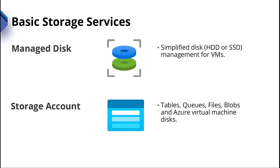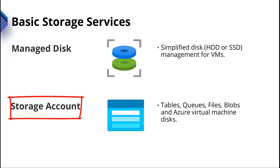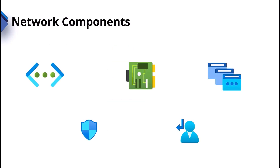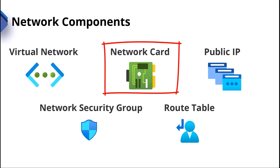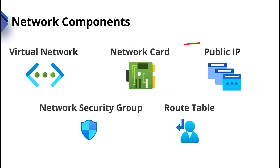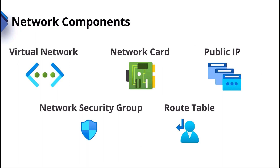For basic storage services, you've got managed disks — a simplified disk that could be a hard drive or SSD for virtual machines — and then you've also got your storage account, which provides tables, queues, files, blobs, and can also store Azure virtual machine disks. Think of that as up to five petabytes of storage that you can provision on demand and choose different services from. Expanding on the network components, in addition to the virtual network, we've got the network card — a software-defined construct attached to your virtual machine. We can create public IP addresses, network security groups which operate like firewalls, and route tables to direct traffic through a more advanced firewall if needed.